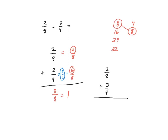I want to point out that this problem would have been simpler if I had looked at two-eighths and simplified it before I began. I can find an equivalent fraction by dividing by a common factor of two: two divided by two is one, and eight divided by two is four. So two-eighths simplifies to one-fourth. Now I already have a common denominator of fourths, and I can just add one-fourth plus three-fourths to get four-fourths, which equals one whole. I recommend always looking at your problem first to see if you can simplify before you start — it makes the problem less complex.